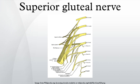The superior gluteal nerve originates in the sacral plexus. It arises from the dorsal divisions of L4, L5, and S1. It leaves the pelvis through the greater sciatic foramen, above the piriformis, accompanied by the superior gluteal artery and the superior gluteal vein.